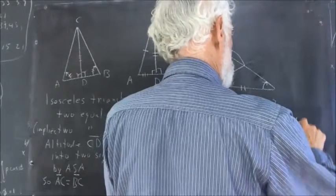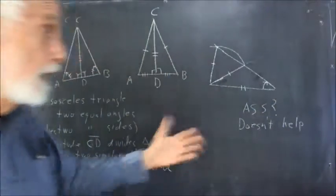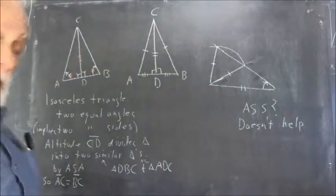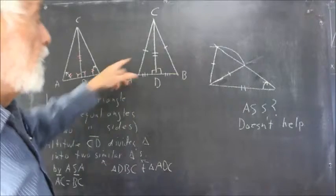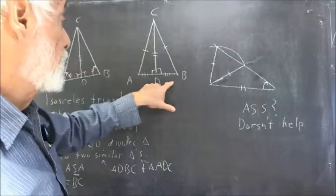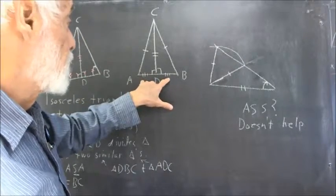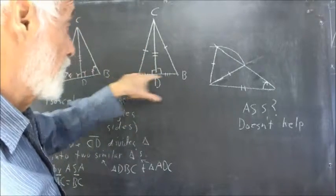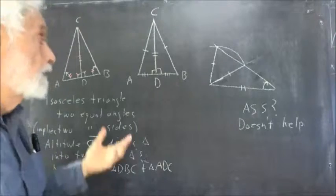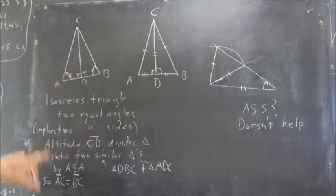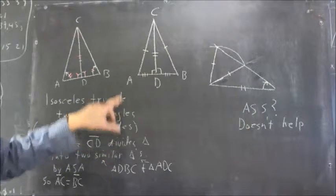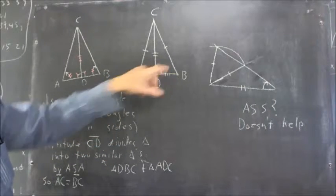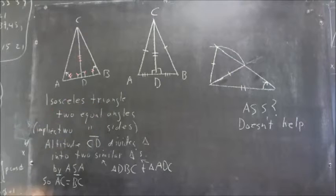So, angle, side, side, or side, side, and angle doesn't help. So, in this case, we did resort to the Pythagorean theorem to prove that the third side is the same, and now we have side, side, side, and that proves that if you know if two sides are congruent, then you have the two equal angles. And either way, this is an isosceles triangle.